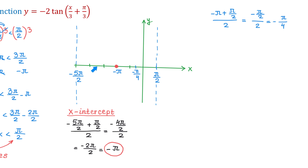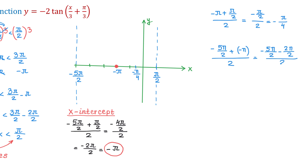To find the point halfway to the left, we add negative 5 pi over 2 and negative pi and divide by 2. Rewriting negative pi as negative 2 pi over 2, we get negative 5 pi over 2 minus 2 pi over 2, which is negative 7 pi over 2, divided by 2 is negative 7 pi over 4. So this point has the coordinate negative 7 pi over 4.